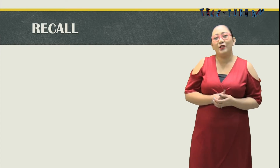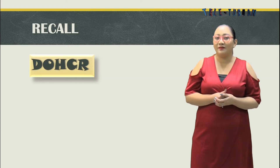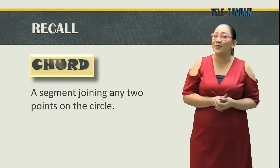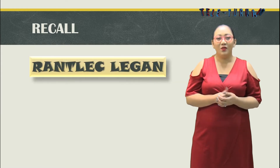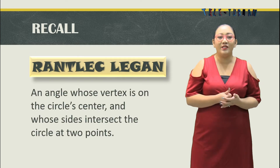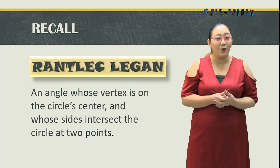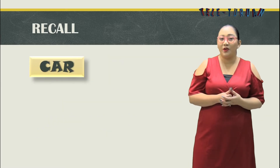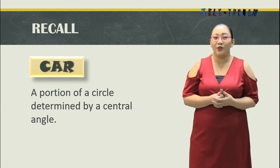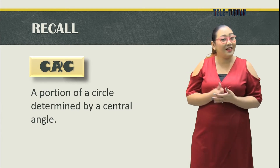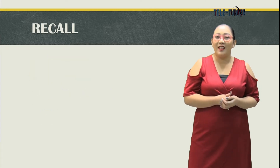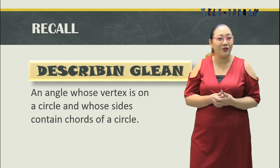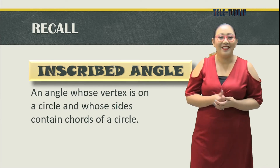Before we start our lesson, let's try to do a little recall. A chord is a segment joining any two points on the circle. A central angle is an angle whose vertex is on the circle's center and whose sides intersect the circle at two points. An arc is a portion of the circle determined by a central angle. An inscribed angle is an angle whose vertex is on the circle and whose sides contain chords on a circle.